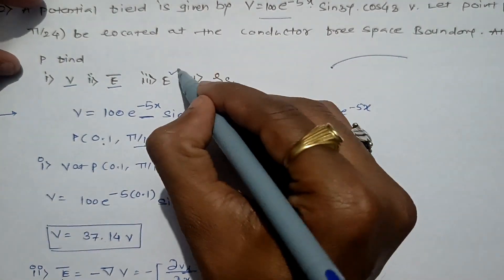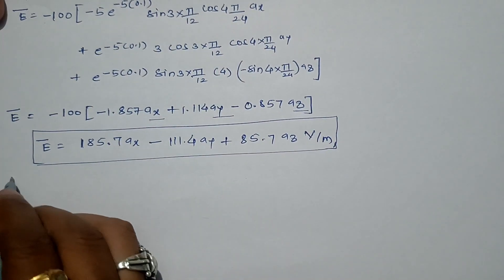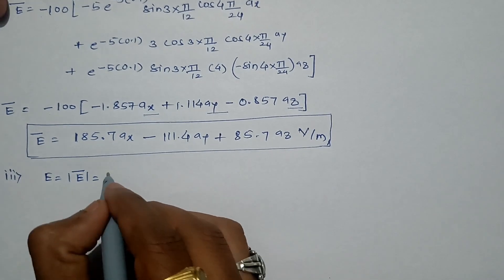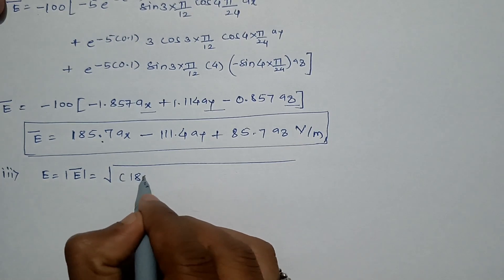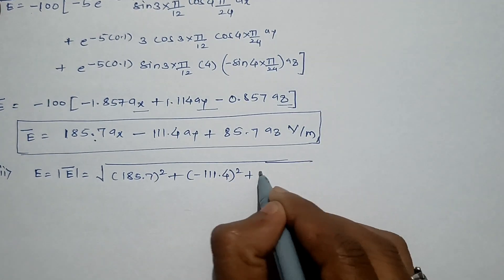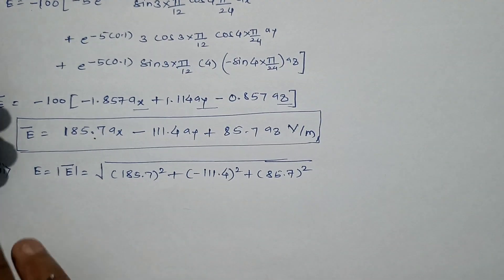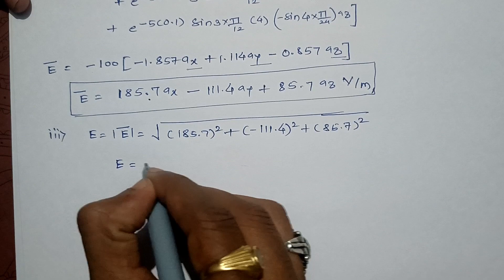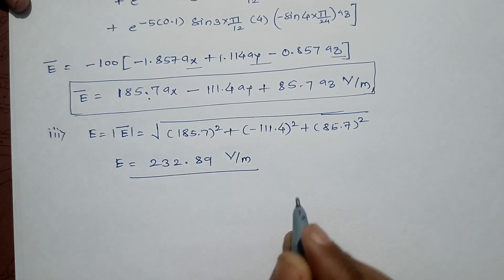Now the third question asks for |E|, the magnitude of electric field intensity. We compute the magnitude as the square root of the sum of squares: √(185.7² + (-111.4)² + 85.7²). Evaluating this gives 232.89. So the magnitude of electric field intensity is 232.89 volts per meter.